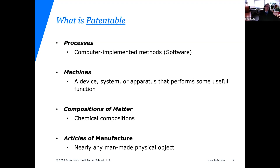Generally, patents are one of the more powerful avenues for protecting a software-based invention, though you can get some protection via copyrights and trade secrets as well. Other patentable categories include machines, devices, and apparatuses; compositions of matter, mainly pharmaceuticals; and articles of manufacture — essentially everything else that is man-made physical objects. My favorite example is silly putty: it's not a machine or device, but it is something you could get a patent on.